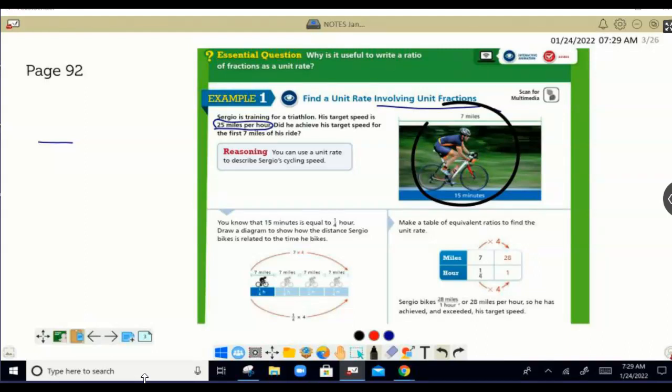We want to find miles per hour. So what do we put on the bottom? The hours, or the time, rather. And the time is 15 minutes.